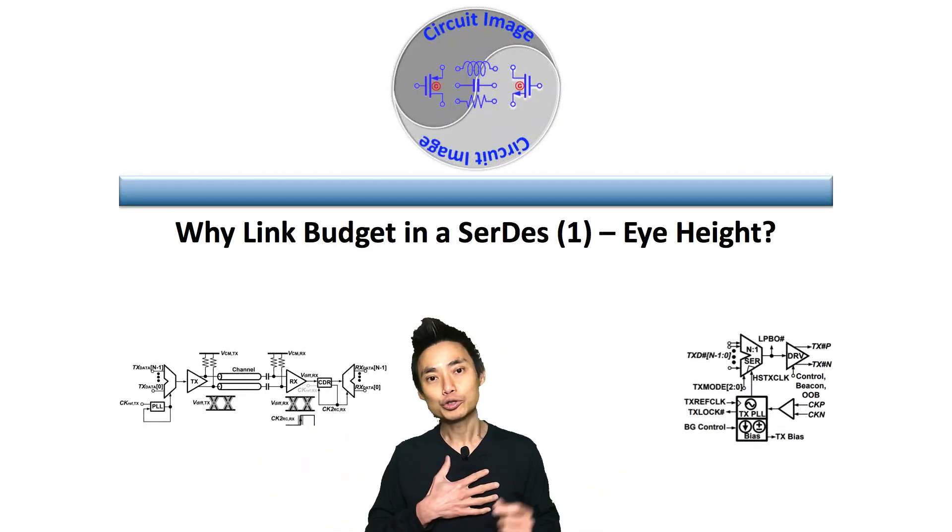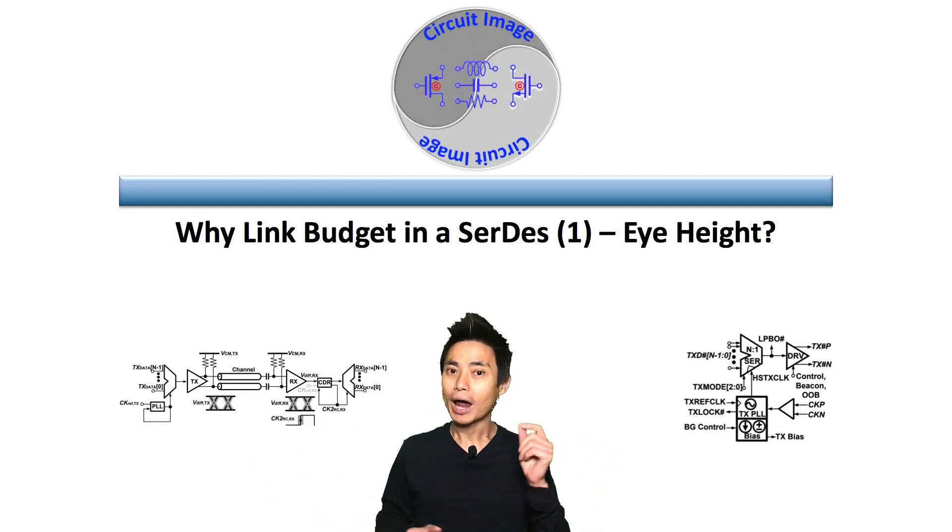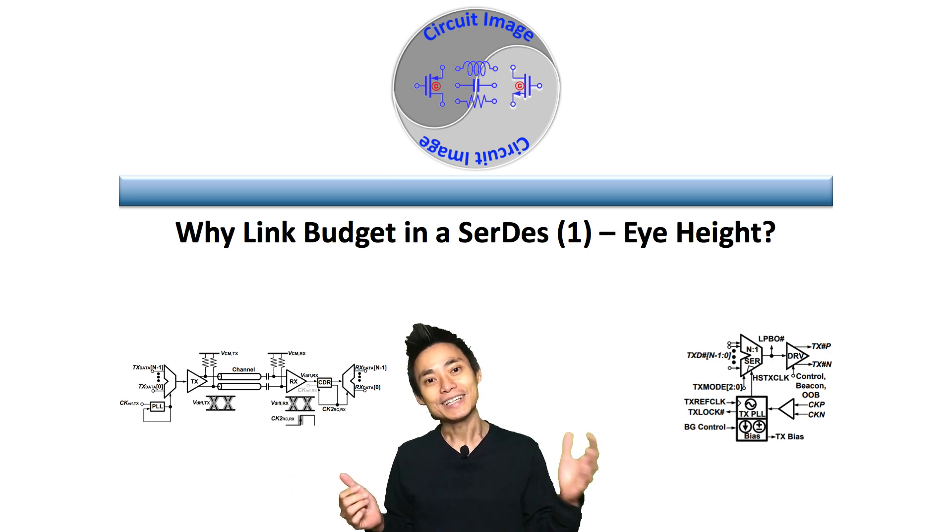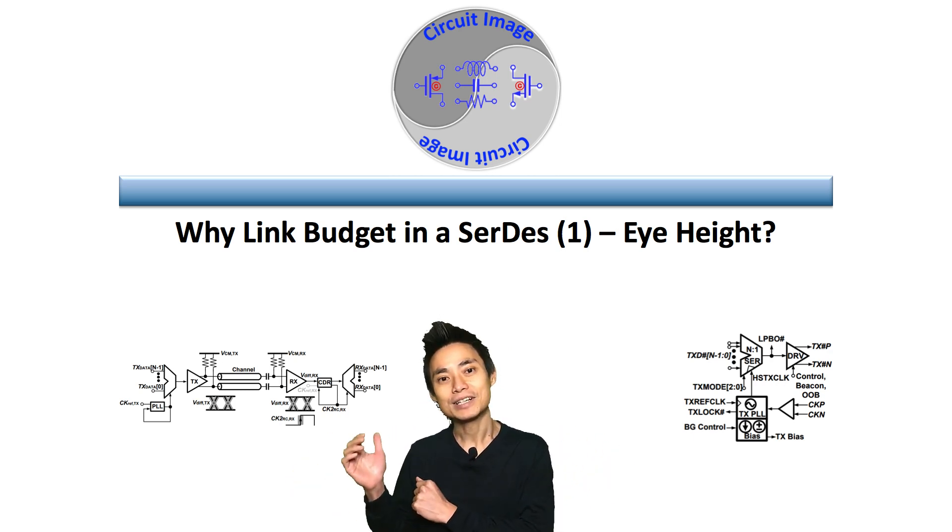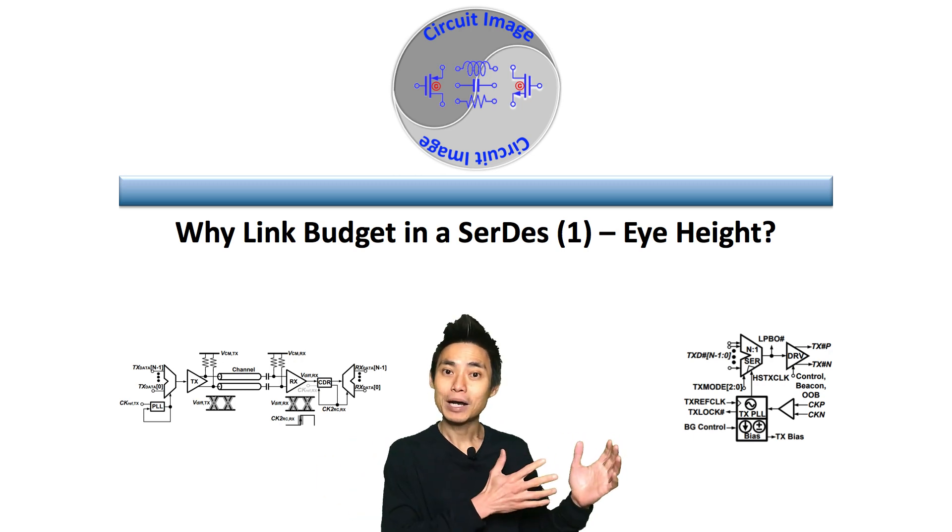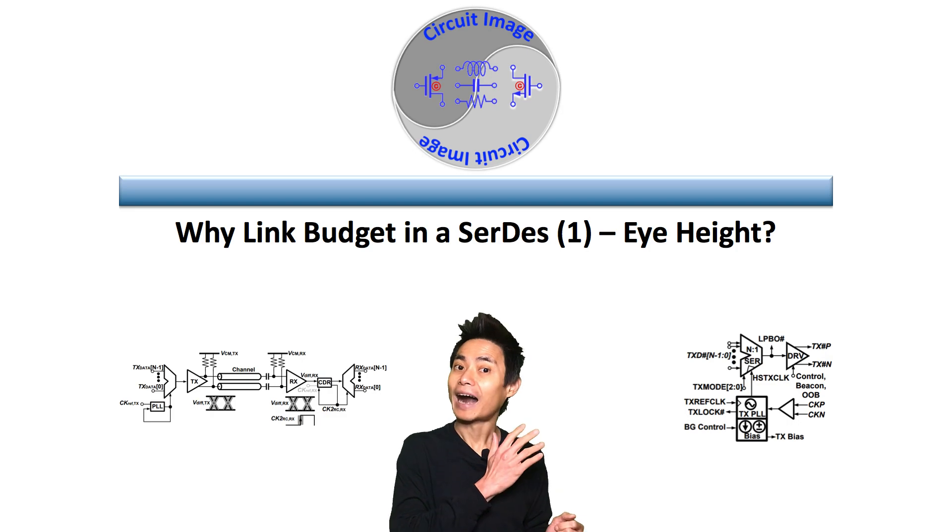In this video, I am going to show the image of why we need to have a link budget in a SerDes system, which is the complete SerDes system level besides the jitter budget and the TX output of the SerDes we discussed last time.